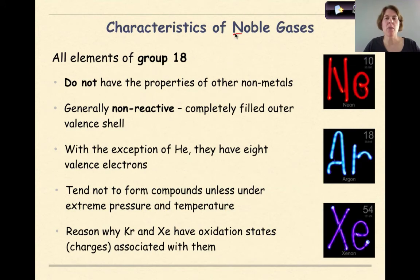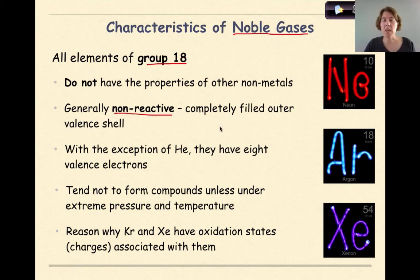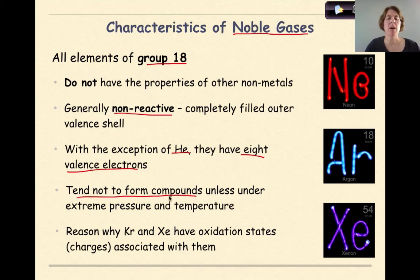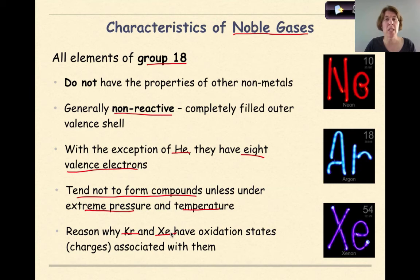Finally, the noble gases include all elements of group 18. They do not have the properties of other non-metals. They're typically non-reactive because their outermost shell ends with 8 electrons — with the exception of helium. We'll soon learn about the octet rule, which explains why they're non-reactive. They tend not to form compounds unless under extreme pressure and temperatures. Krypton and xenon can form compounds with fluorine under duress, but for the most part noble gases are inert.